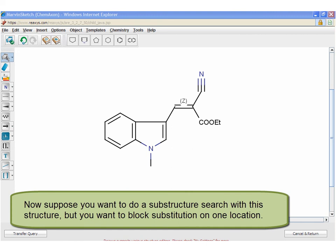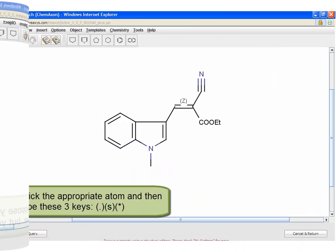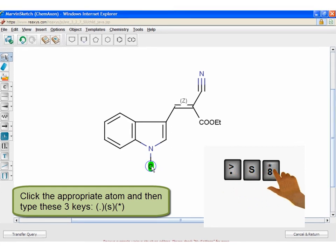Now suppose you want to do a substructure search with this structure, but you want to block substitution on one location. Click the appropriate atom, and then type period, S, asterisk.